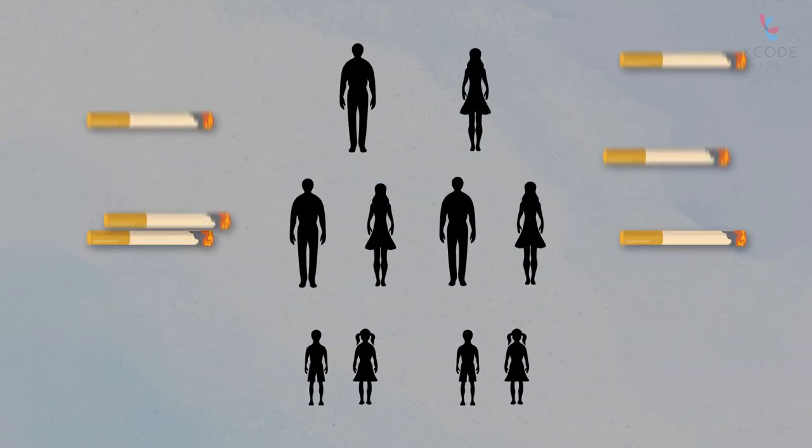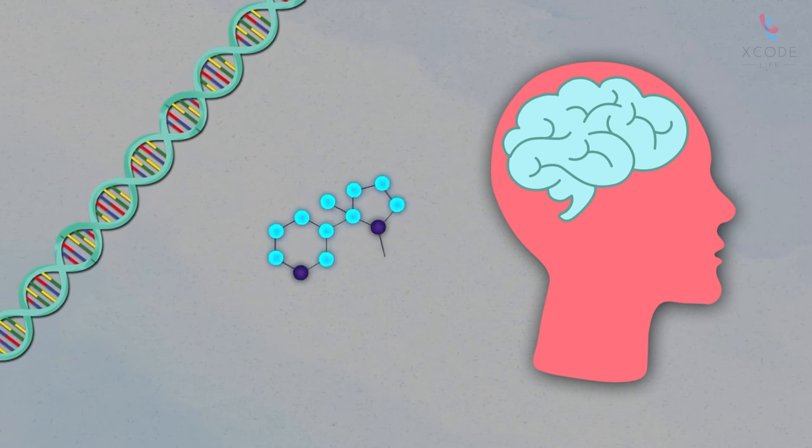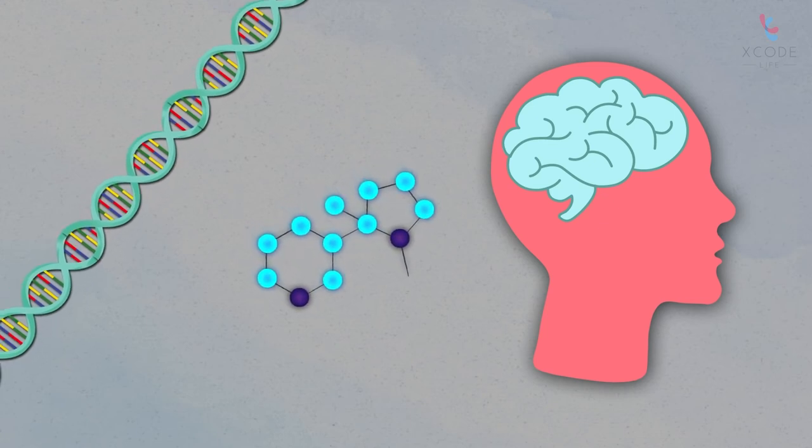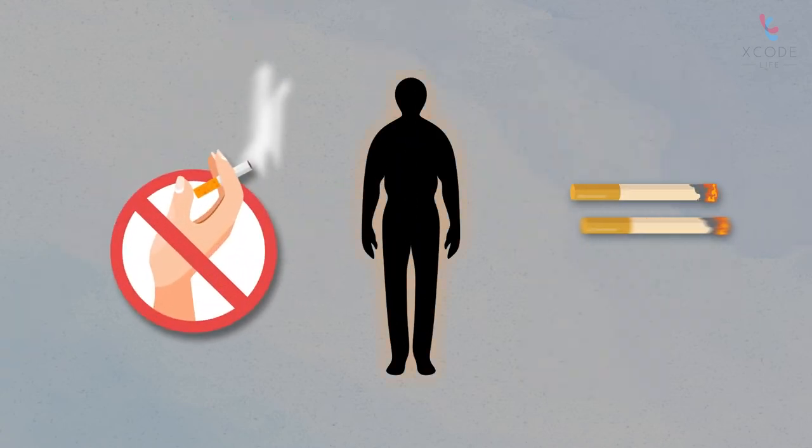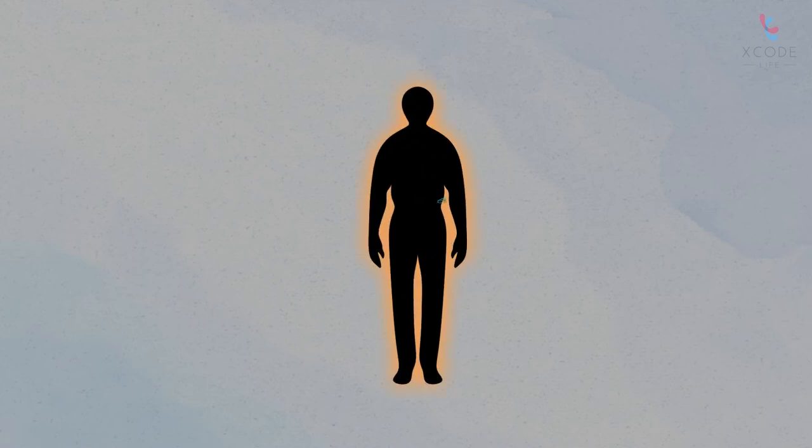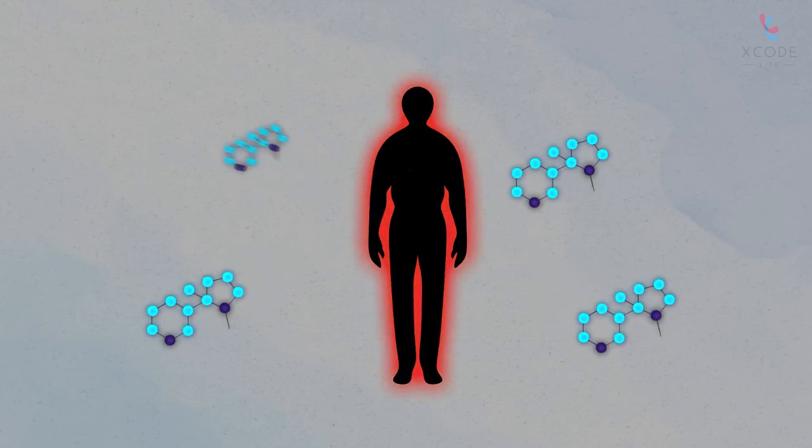Nicotine dependence can also be inherited. Genes involved in how the brain responds to nicotine and nicotine clearance are likely to contribute to the inheritance. For instance, people who metabolize nicotine slowly tend to smoke fewer cigarettes and can also quit smoking with lesser effort.